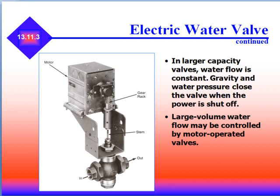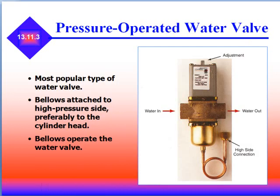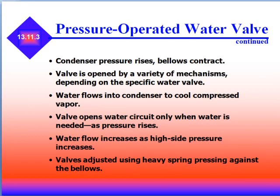Large volume water flow may be controlled by a motor operated valve. Pressure operated water valves are the most popular types. The bellows attach to the high side pressure, usually on the cylinder head, and operate the valve. As the compressor pressure rises, the bellows contract and the valve is opened. Water flows into the condenser to cool the compressed vapor, and the valve opens the water circuit only when water is needed. Water flow increases as the high pressure increases, and the valve adjusts using a heavy spring pressing against the bellows. The valves are set to open at definite head pressures.